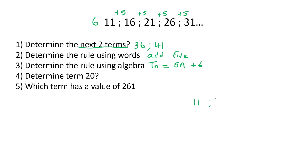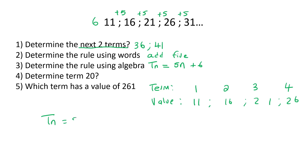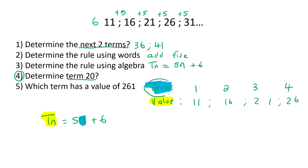Remember: 11, 16, 21, 26 are the values, and the term is like a position — position one, two, three, four. A lot of learners get confused because they see TN and think they go together, but the term goes in one place and the value goes in another. Question four says determine term 20 — so we fill in the blue one, 20. It becomes 5 × 20 + 6, which gives 106.